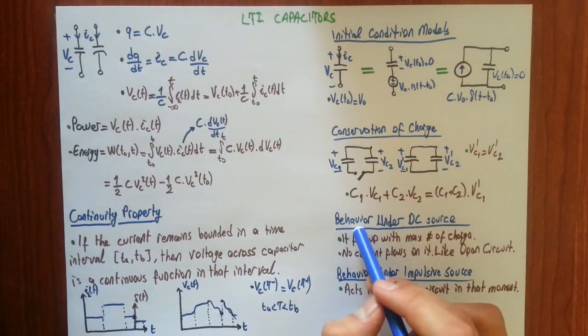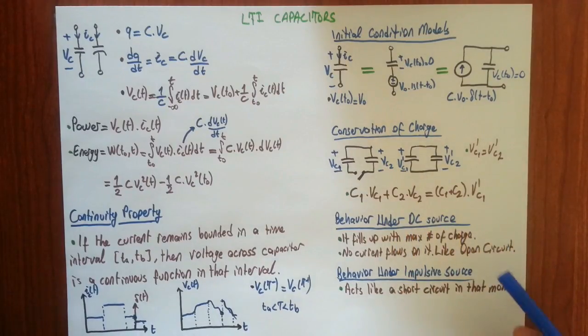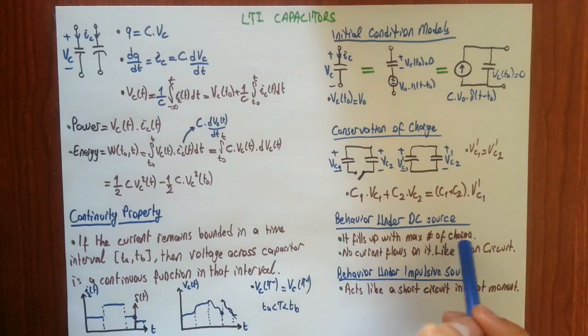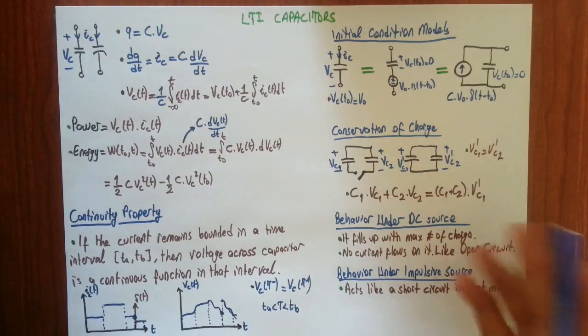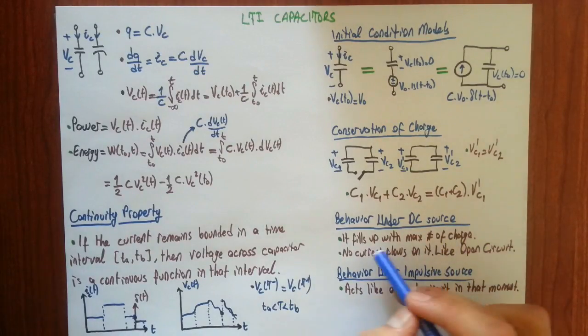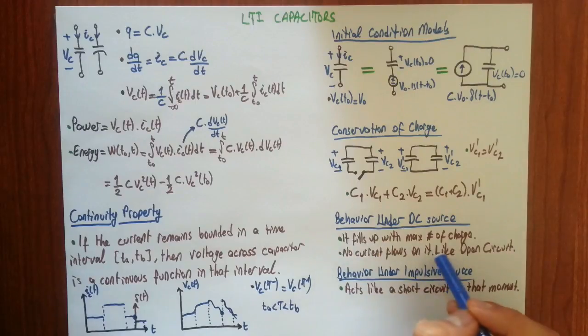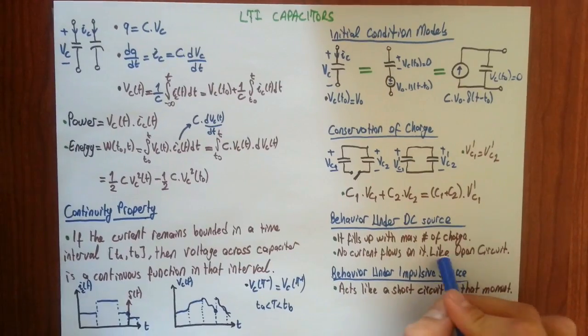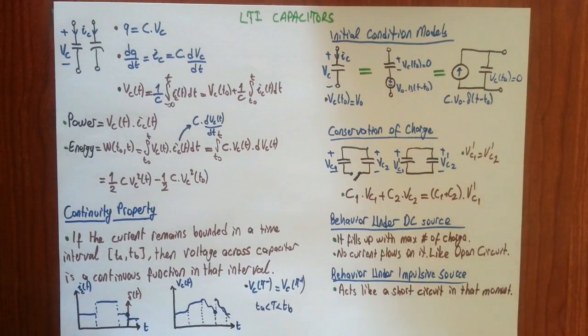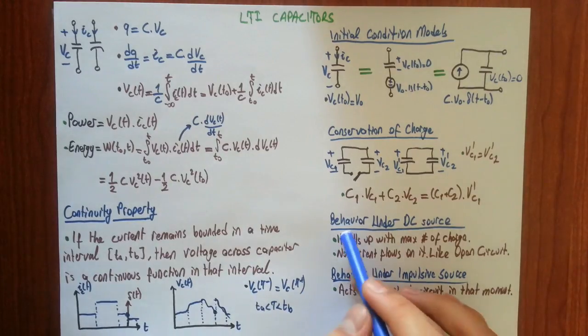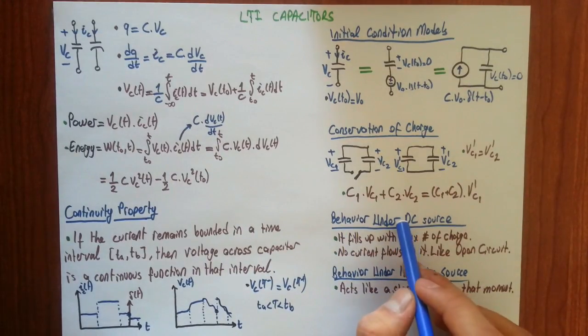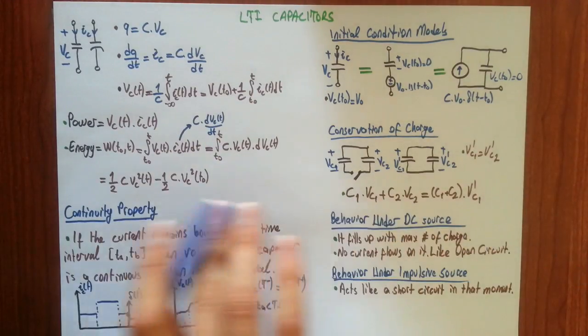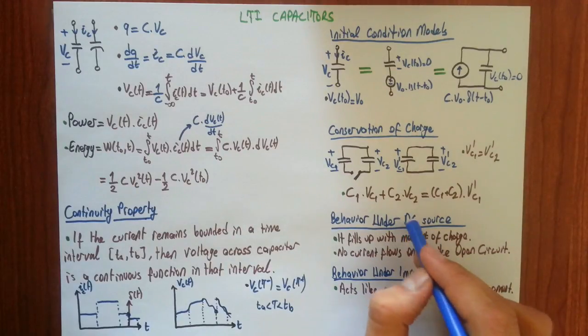Let's move on to the behavior under DC source of a capacitor. After very long time under DC source, capacitor fills up with maximum number of charge. And since it included maximum number of charge, no current flows through capacitor. Then, if no current flows through capacitor, it acts like an open circuit. And this is also an important property. Please learn this one. I am not talking about a little time interval—I am talking a long time interval after a very long time under DC source.